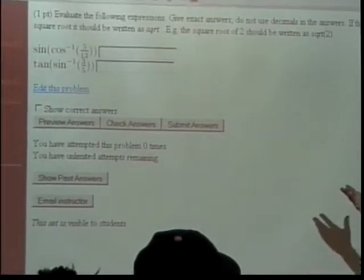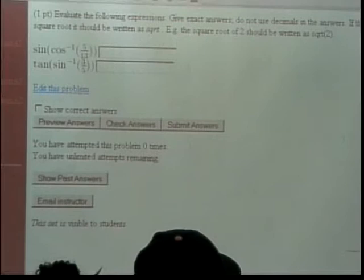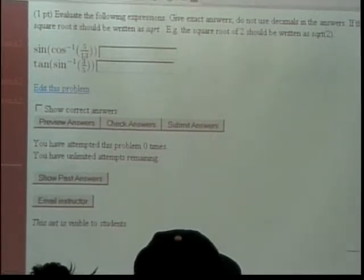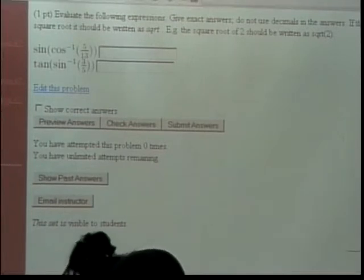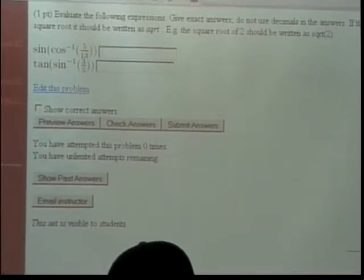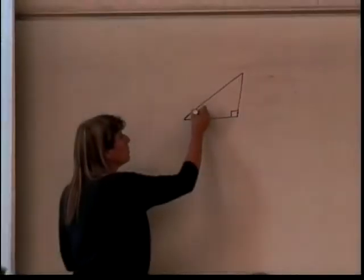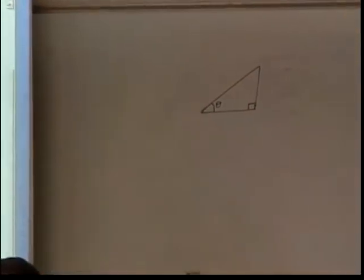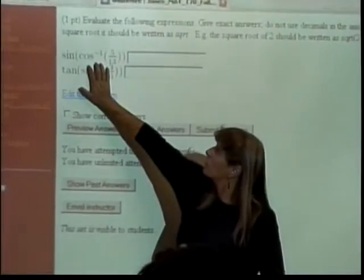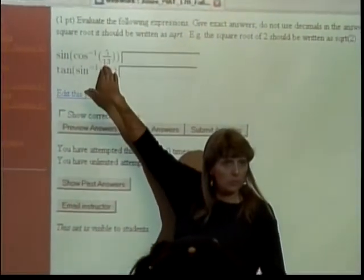Do you guys want me to make a triangle for either or both? Which one? Okay, let's go for both. Both? Okay, we'll just start with the first one. So, here's my triangle. This is going to be the angle theta that qualifies as having the inverse cosine of 5 over 13.